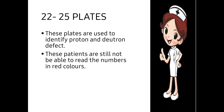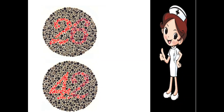Plates 22 to 25 are used to identify protan and deutan defects — red and green color defects can be identified here. These patients are still not able to read the numbers in red colors. If there is a protan defect, meaning red color is defected, then the person will not be able to read out the numbers written in red color, allowing us to determine the specific defect.